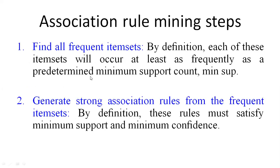The steps of association rule mining: the first step is finding frequent items. An item is said to be a frequent item if it occurs frequently, that is, by satisfying the minimum support count. For frequent item generation you use the a priori algorithm.